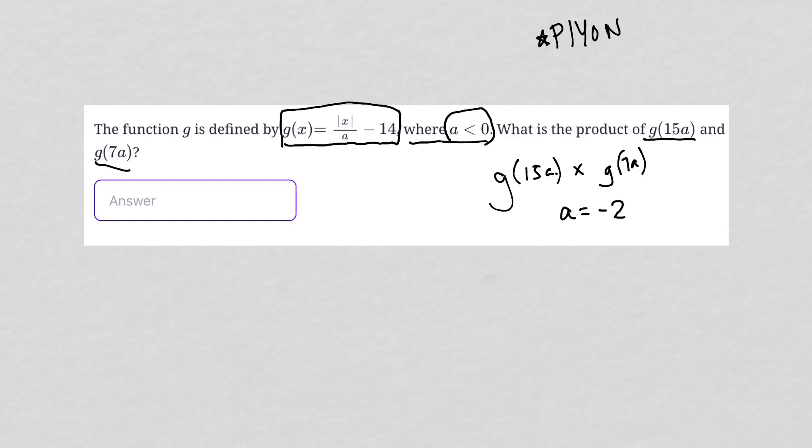If you follow any of my videos, you know that I usually use 2 when I plug in my own number. But because our a value is less than 0, I'm going to go with a is negative 2.